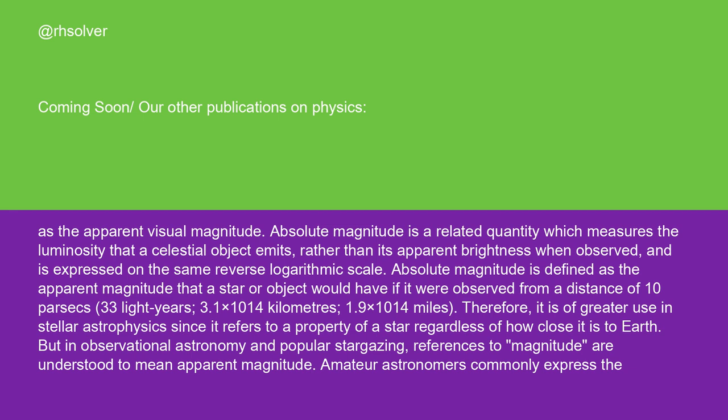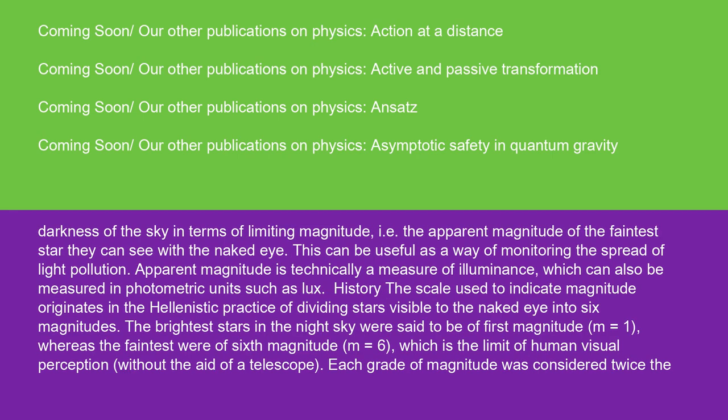Amateur astronomers commonly express the darkness of the sky in terms of limiting magnitude, i.e. the apparent magnitude of the faintest star they can see with the naked eye. This can be useful as a way of monitoring the spread of light pollution. Apparent magnitude is technically a measure of illuminance, which can also be measured in photometric units such as lux.